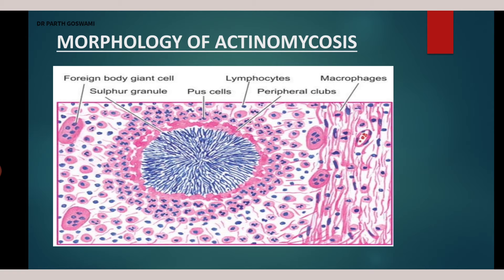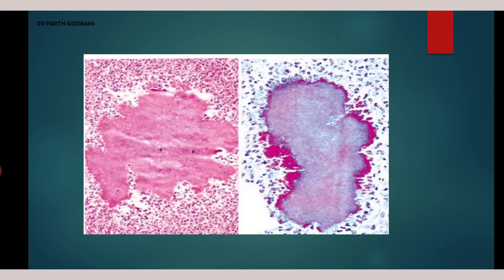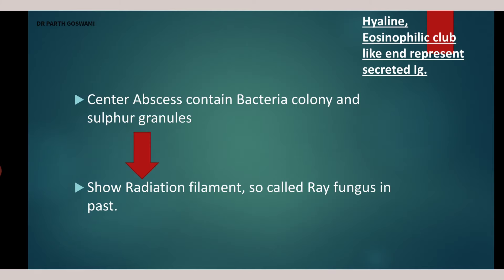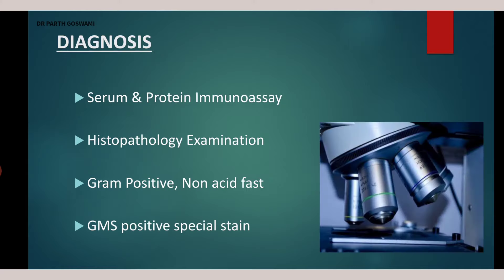To summarize the morphology: centrally, the bacterial colony has radiating filaments; surrounding it are acute inflammatory cells and pus; further out are lymphocytes, plasma cells, and giant cells (modified macrophages); and the outer coat is formed by fibrosis. In the diagram of actinomycosis, club-shaped eosinophilic structures surrounding the colony represent secreted immunoglobulins. This is not a fungus — it was a past misconception due to the radiating filaments, but it is a bacterial infection.